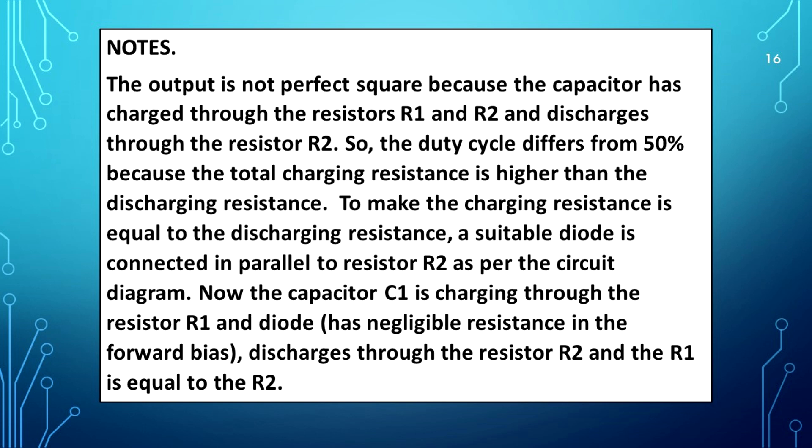The output is not a perfect square wave because the capacitor charges through resistors R1 and R2 but discharges only through R2. So the duty cycle differs from 50% because the total charging resistance is higher than the discharging resistance. To make the charging resistance equal to the discharging resistance, a suitable diode is connected in parallel with resistor R2. Now the capacitor C1 charges through R1 and the diode, and discharges through R2, with R1 equal to R2.